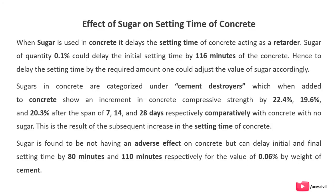The effect of sugar on the setting time of concrete: basically, when sugar is used in concrete it delays the setting time, acting as a retarder. A sugar quantity of 0.1% by weight could delay the initial setting time by 116 minutes, or approximately 2 hours. Hence, to delay the setting time by the required amount, one could adjust the value of sugar accordingly.